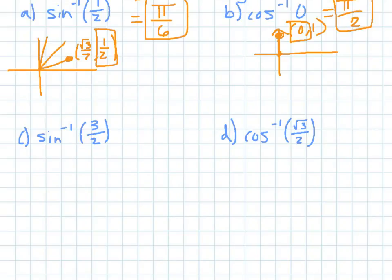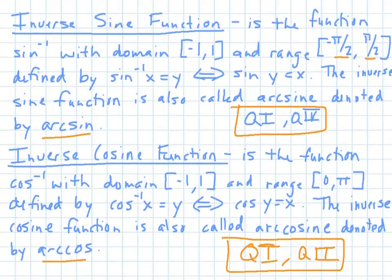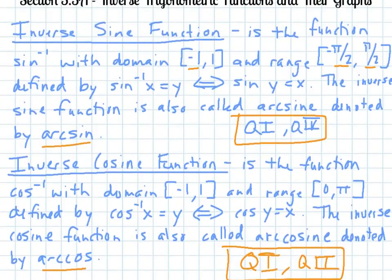Now, sometimes you have values that aren't on the unit circle, which is fine. That just means you need to use your calculator. But think about what 3 halves is. It's the same thing as 1.5, right? Think about, can you have an inverse sine of 1 and 1 half? If you go back, remember we're restricted in between negative 1 and 1.